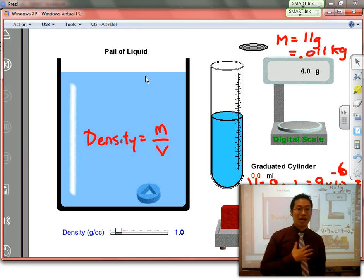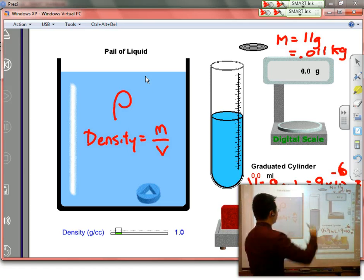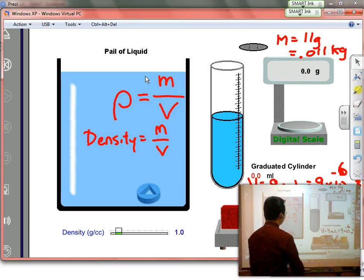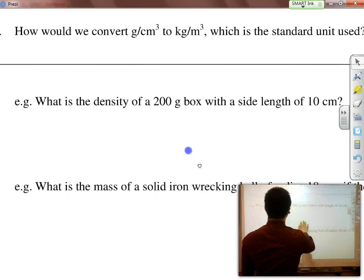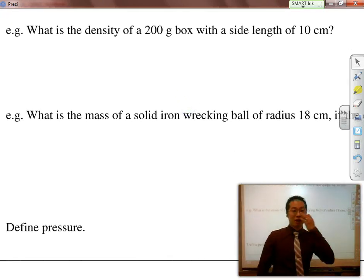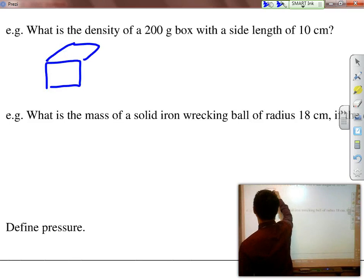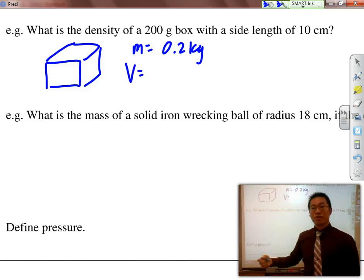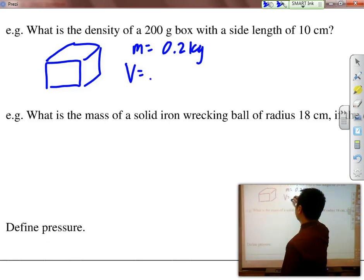Now the symbol that we use for density is not D. We are going to use the Greek letter rho. Basically density is equal to mass divided by volume, and we are going to be using that a lot later on. If I want to do one quick practice question, what is the density of a 200 gram box with a side length of 10 cm? The mass would be 0.2 kg. Volume would be length times width times height. Make sure you convert centimeters to meters before you plug it into the formula.